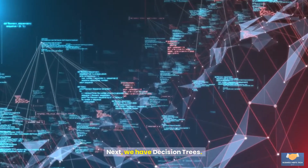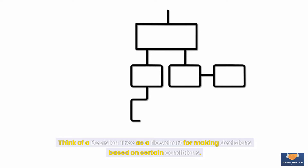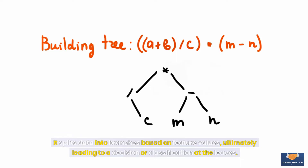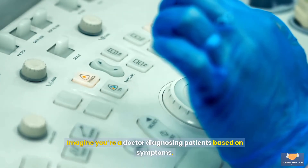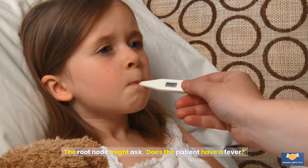Next we have decision trees. Think of a decision tree as a flowchart for making decisions based on certain conditions. It splits data into branches based on feature values, ultimately leading to a decision or classification at the leaves. Imagine you're a doctor diagnosing patients based on symptoms — the root node might ask, does the patient have a fever?